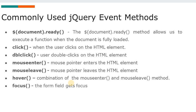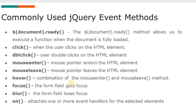Focus fires when a form field gets focus — for example when you click on an input field it gets focus and you can customize it, such as changing the background color. Blur fires when a form field loses focus, for example moving from the name field to the mobile number field. The 'on' method attaches one or more event handlers for selected elements. This is the basic idea of jQuery — watch my next video for a practical explanation. Thanks for listening, bye.